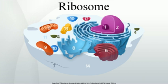Note: these rRNAs do not carry instructions to make specific proteins like mRNAs do. The ribosomal proteins and rRNAs are arranged into two distinct ribosomal pieces of different size, known generally as the large and small subunit of the ribosome. Ribosomes consist of two subunits that fit together and work as one to translate the mRNA into a polypeptide chain during protein synthesis.